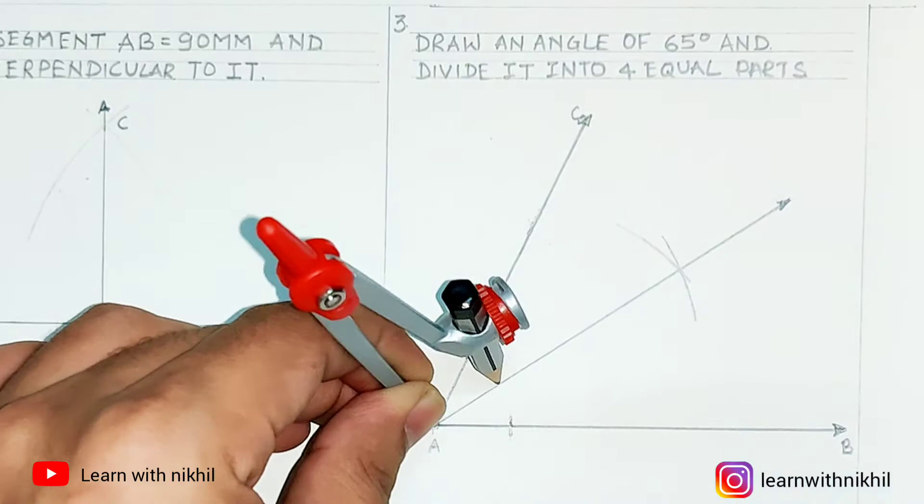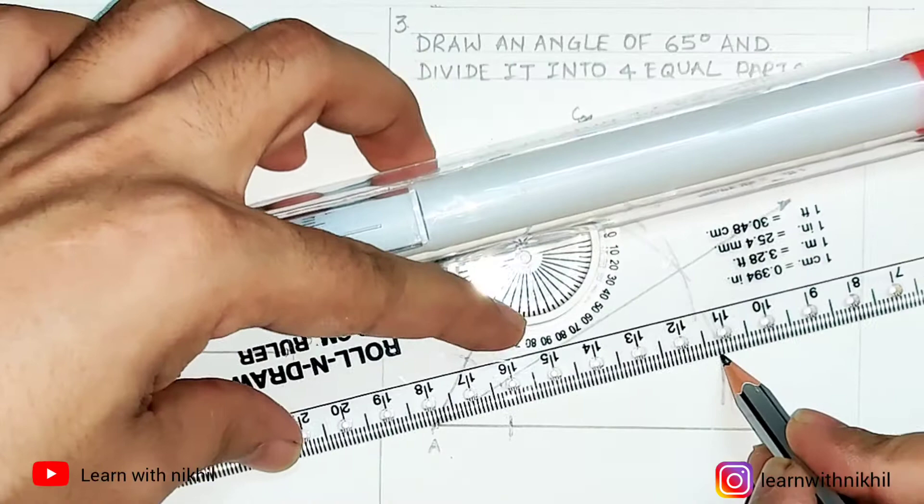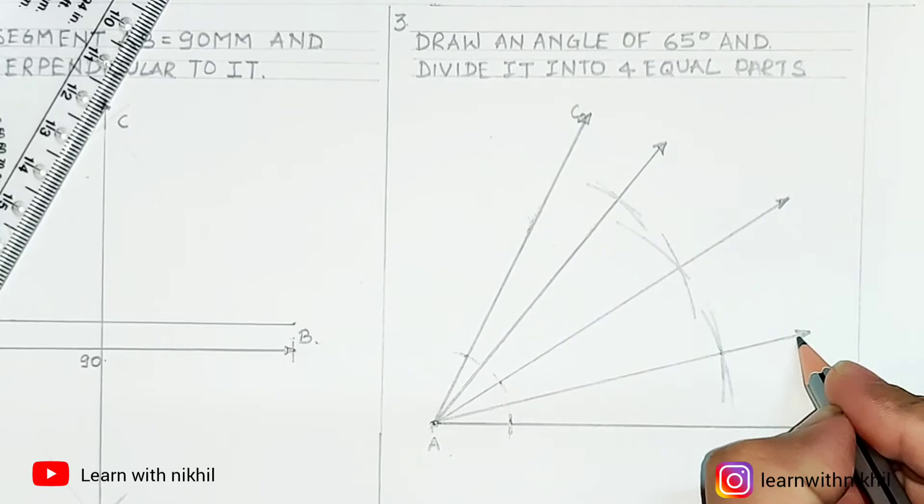Now these two other separate angles, we will divide them again into two equal parts. As you can see, through this method I have divided this 65 degree angle into a total of four equal parts.